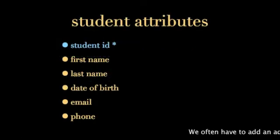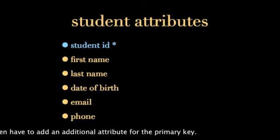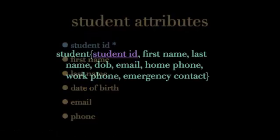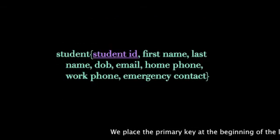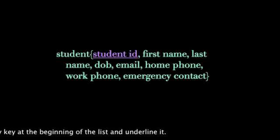We can add a new attribute, student ID, to serve as the primary key. In relational notation, the primary key is the first attribute listed and it's underlined.